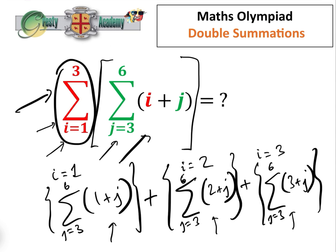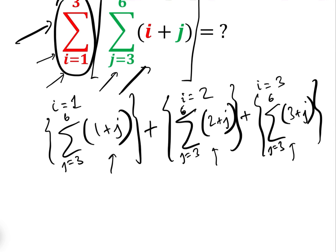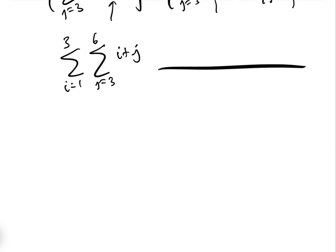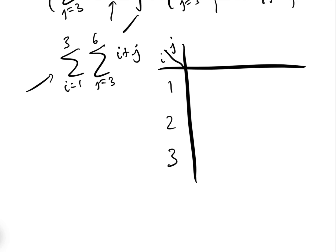Let's see what we get. The easiest way to do this is probably to draw a table, where we have j across the top and i down the side. We know we're going to go through the outer iteration three times, so i equals one, two, and three. And we know j goes from three to six, so we need j equals three, four, five, and six.